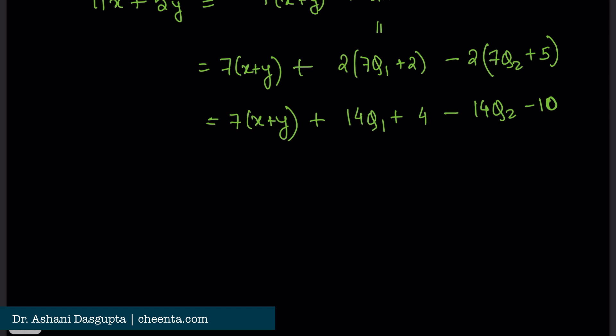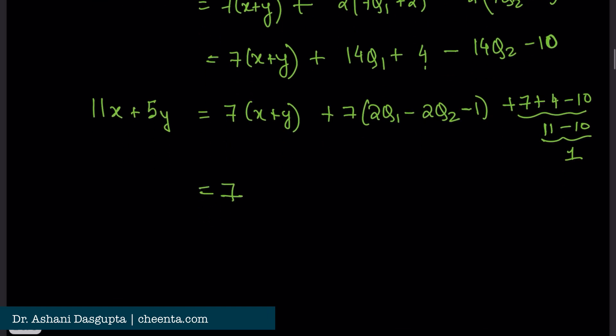So, finally, what do we have? Well, we can write it like this. 7 times x plus y plus 7 times 2q1 minus 2q2. I'll just add a minus 1 here so that I can add a 7 back. So, 7 plus 4 minus 10. This is 11 minus 10 which is just 1. I have 11x plus 5y equals to 7 times x plus y plus 2q1 minus 2q2 minus 1 plus this 1.